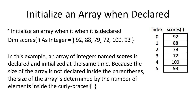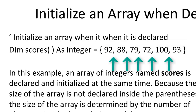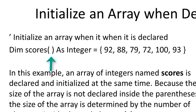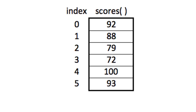An array of integers is declared by placing parentheses after a data type name. We can initialize an array when it is declared by placing the data inside a set of curly braces with each piece of data separated by a comma. Because the size of the array is not declared inside the parentheses, the size is determined by the number of elements inside the curly braces. The position in an array is called the index, also known as a subscript.